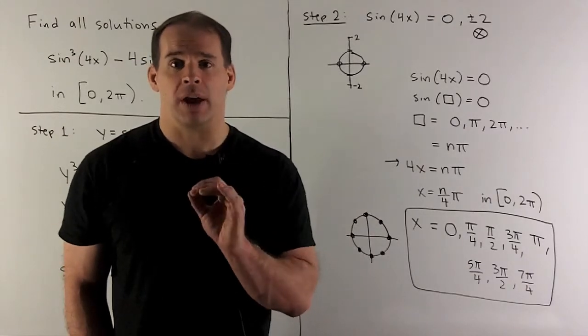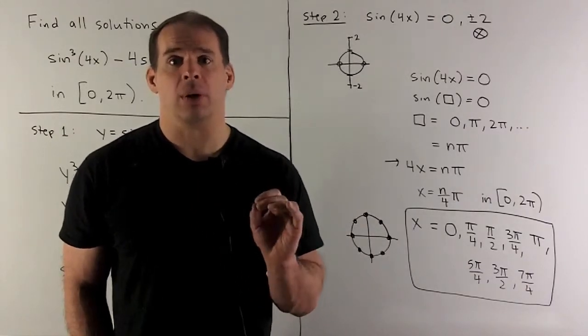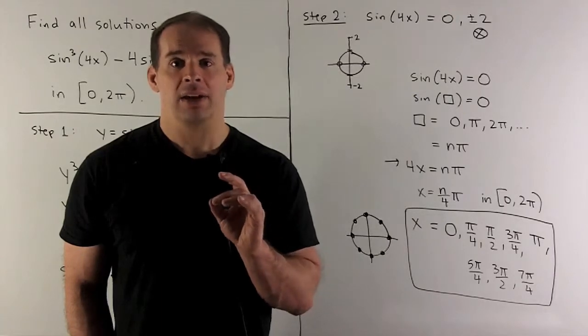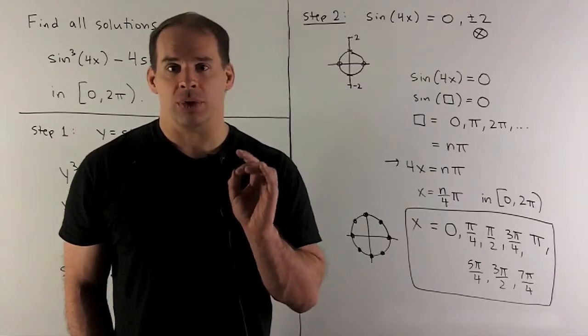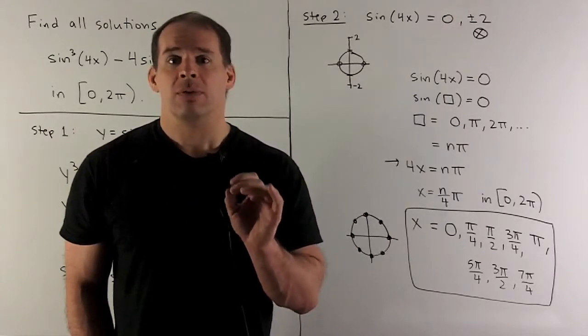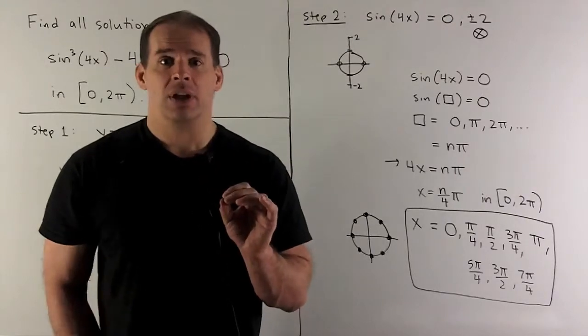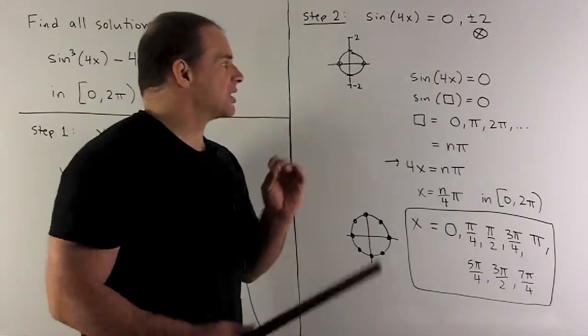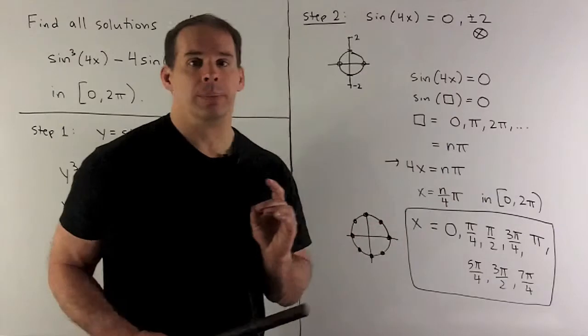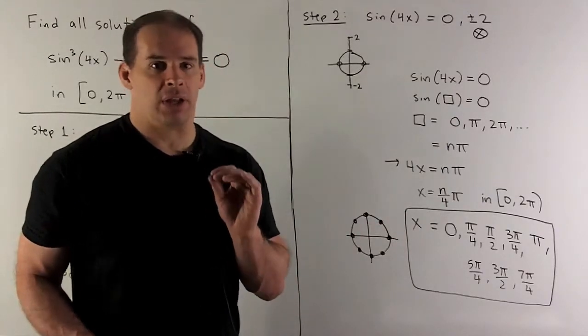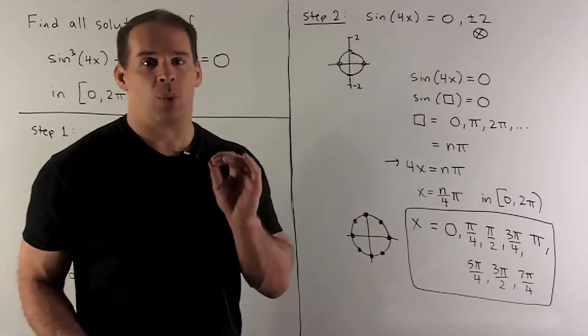So that leaves us with sin(4x) = 0. Now, again, sine is the y-value on the unit circle. I'm going to let 4x equal □. So we're looking for where sin(□) = 0. If we take a look at the y-values,